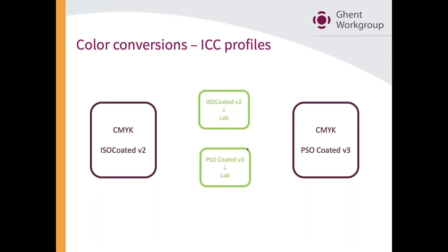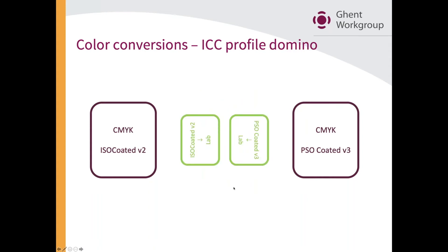The question is: how do you use these to convert from point A to point B? The best explanation I've ever heard came from someone at Kodak, who said you have to think about it like playing dominoes — things have to match up. So you use two ICC profiles: the ISO Coated v2 profile first to convert from your original color space into Lab, then the second ICC profile to go from Lab to your target color space. If you're going from sRGB to PSO Coated v3, this works perfectly.